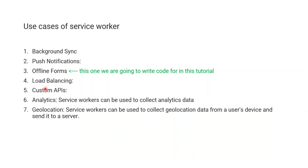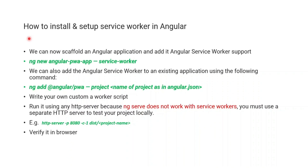Load balancing is a needed feature in web applications where you decide which server to route a request to, since in the real world we have multiple servers and want to balance requests for better performance. You can also write custom APIs that serve tasks entirely on the client without server interaction. Analytics and geolocation services are additional use cases — a service worker can collect geolocation data from a user's device and send it to the server.